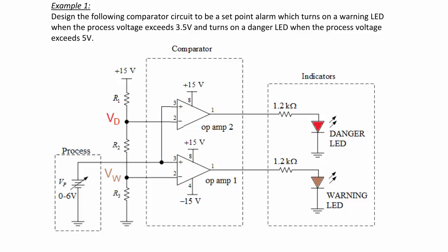Now let's try an example. Design a comparator circuit to be a set point alarm which turns on a warning LED when the process voltage exceeds 3.5 volts, and turns on a danger LED when the process voltage exceeds 5 volts. We have a circuit with 3 resistors in series — R1, R2, and R3 — connected between a 15 volt power supply and ground.